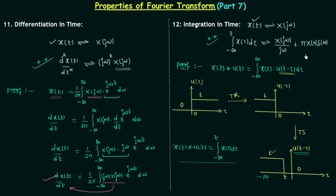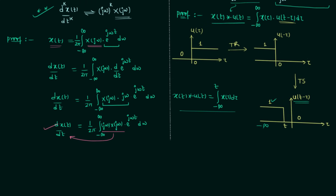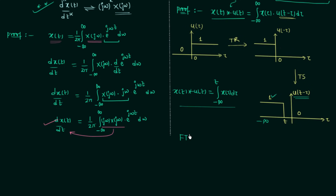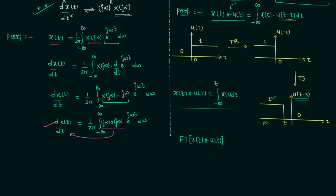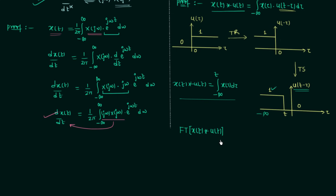We see that the integration of x(τ) from minus infinity to t is the same as x(t) convolved with u(t). So if we can prove that the Fourier transform of x(t)*u(t) equals X(jω)/jω + π·X(0)·δ(ω), then our property is proved. We have assumed the Fourier transform of x(t) is X(jω), and from the Dirichlet conditions lecture, the Fourier transform of u(t) is 1/(jω) + π·δ(ω).